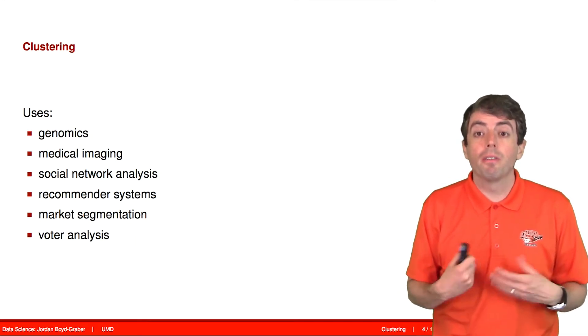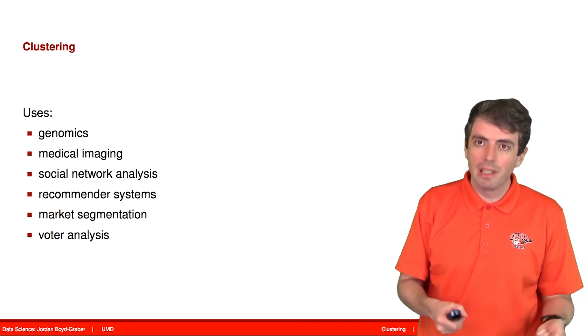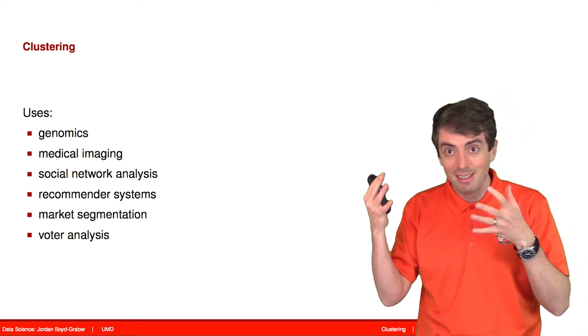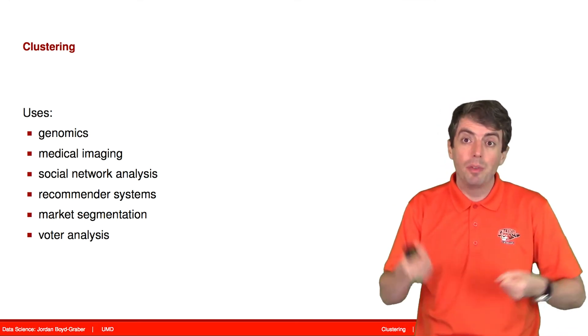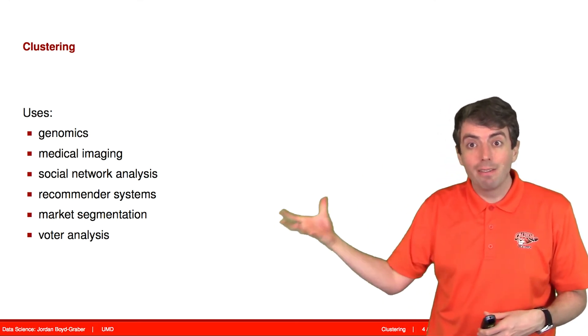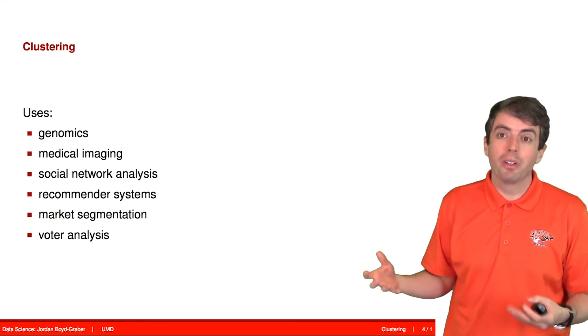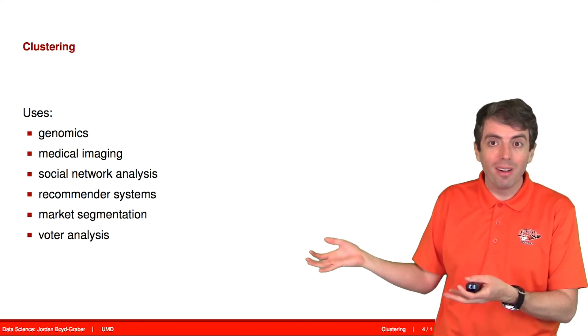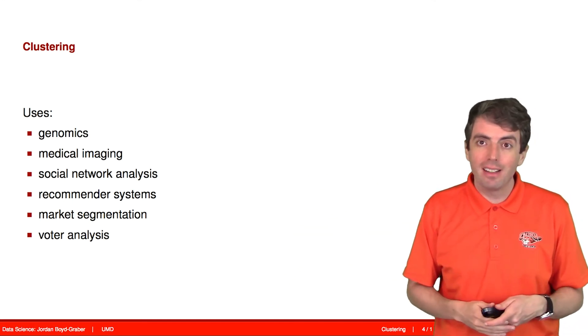Clustering is used for a variety of applications from genomics to political science to industrial applications like recommender systems, where Netflix divides up all of the movies into clusters. One of those clusters corresponds to action horror. If you like one movie in that cluster, you'll like other movies in that cluster.